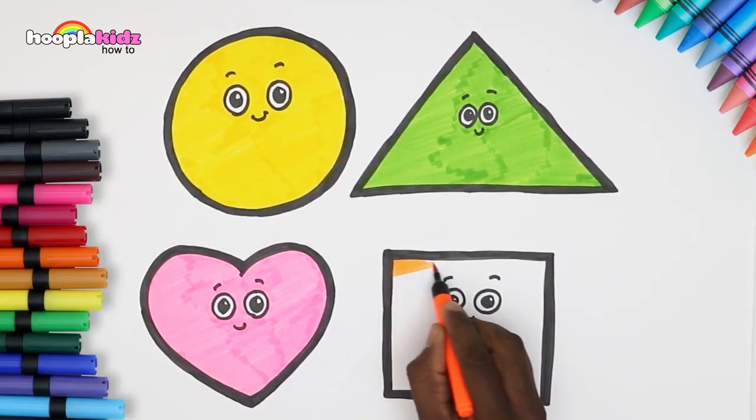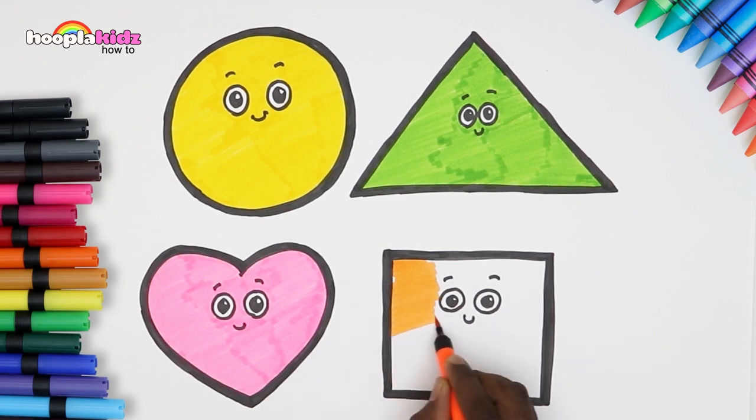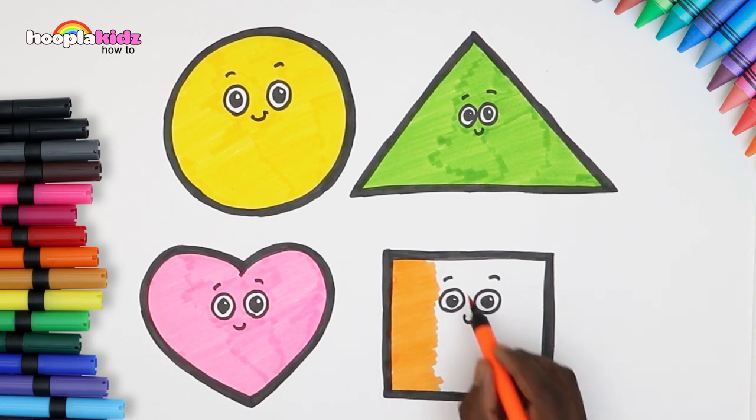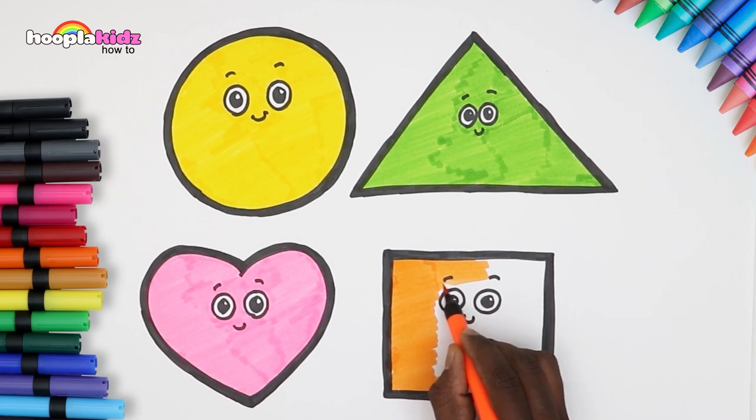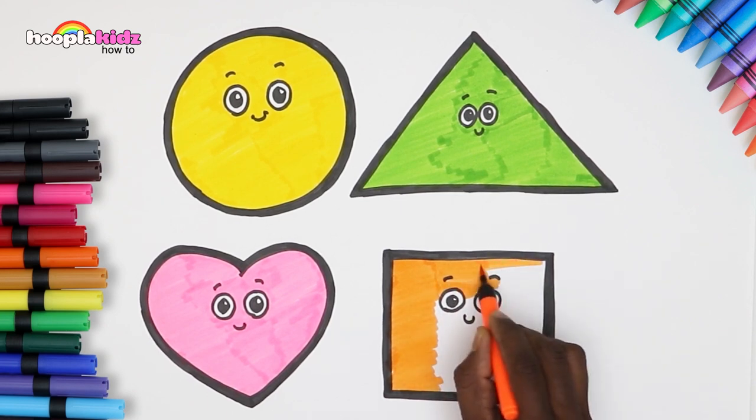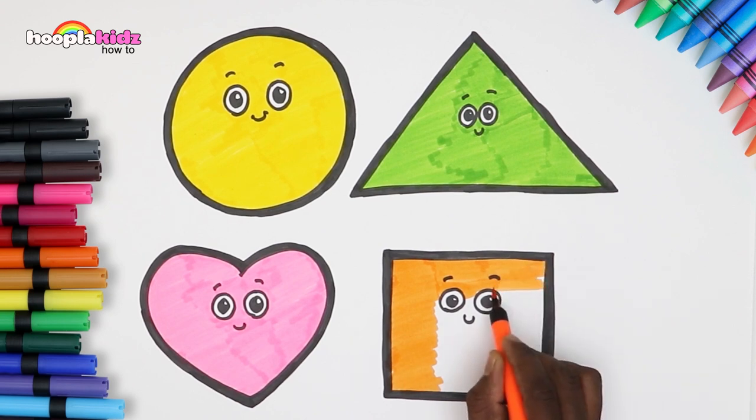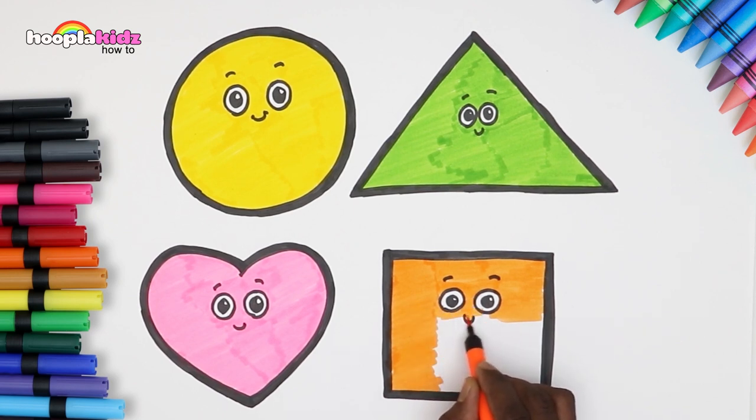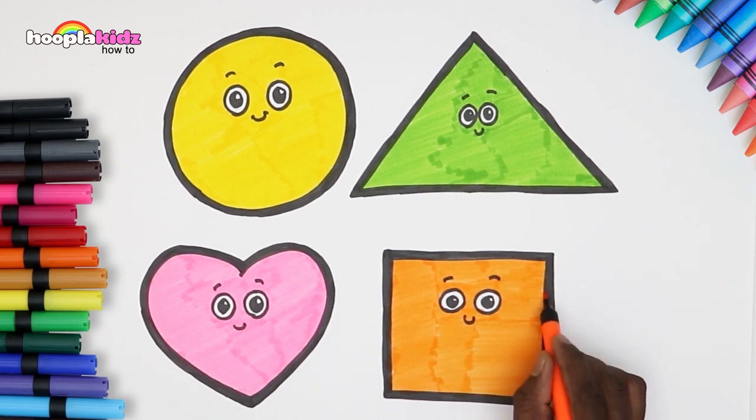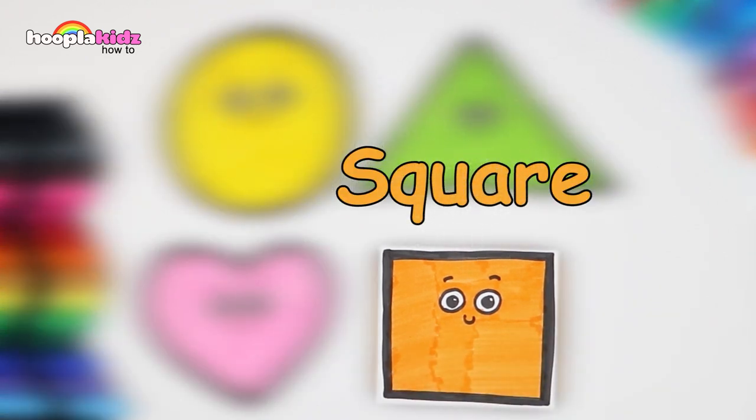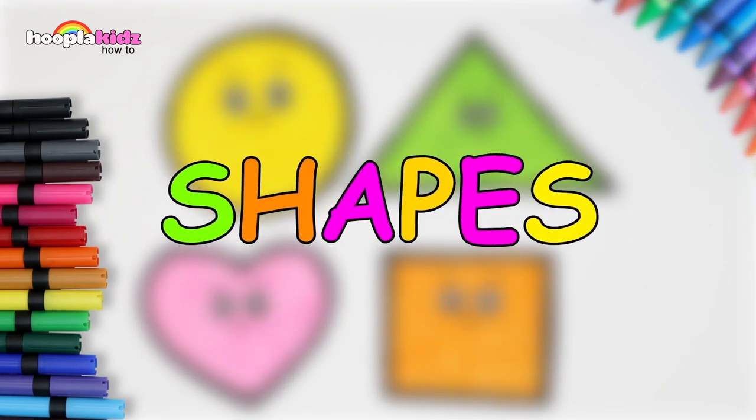Lastly, let's use orange for the square. We're almost done kids. Our drawing looks great. It's such a happy colorful picture and also a fun way to learn our shapes. We are done with the square. Here are all our shapes. Hope you had lots of fun. See you next time.